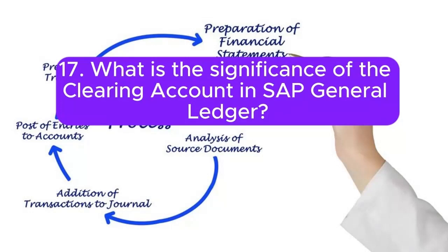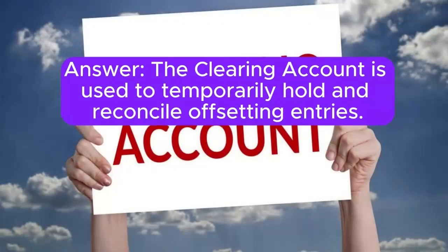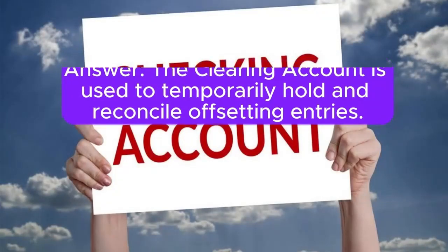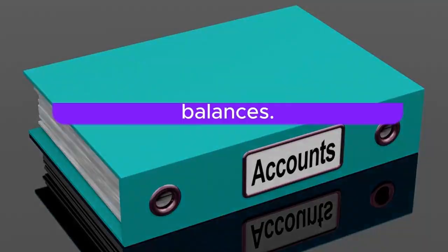Question 17: What is the significance of the clearing account in SAP General Ledger? Answer: The clearing account is used to temporarily hold and reconcile offsetting entries. It facilitates the clearing process, ensuring accurate reporting of net balances.